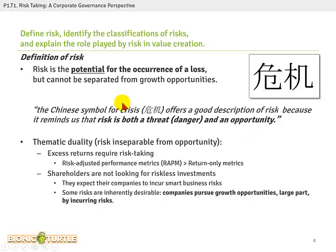We start with the definition of risk. This reading is very specific — they put some thought into this definition. I'll remind you that it's not necessarily the case that we have a single definition of risk. We have various authors in the FRM who approach risk from various angles, but this definition is consistent with what we see throughout Part 1: risk is the potential for the occurrence of loss. It's not the realization of a loss — it's the potential for a loss.